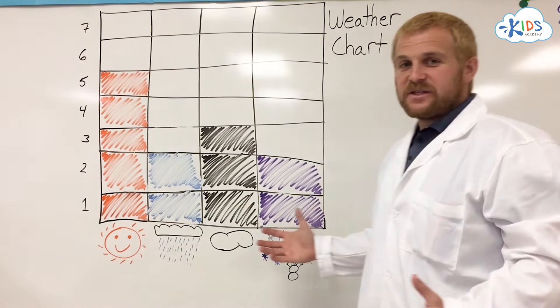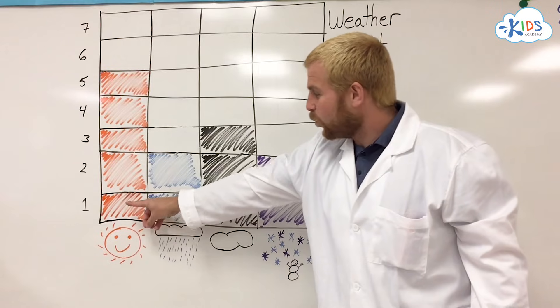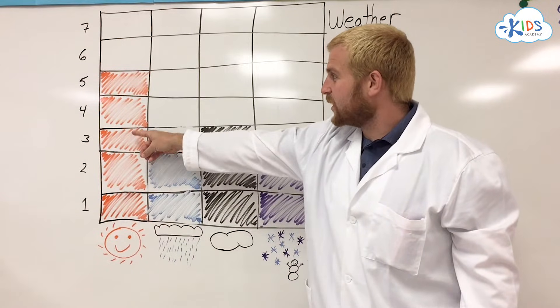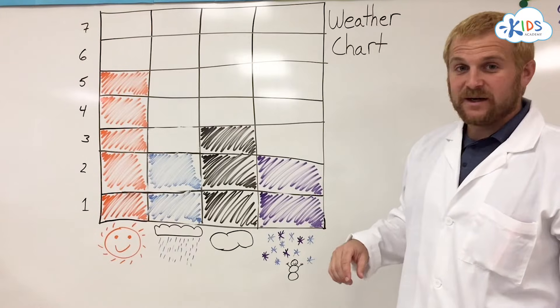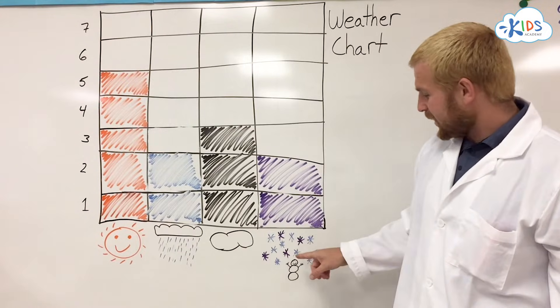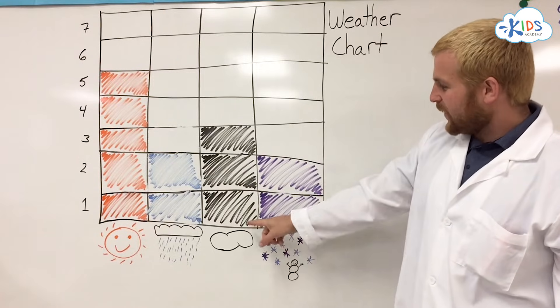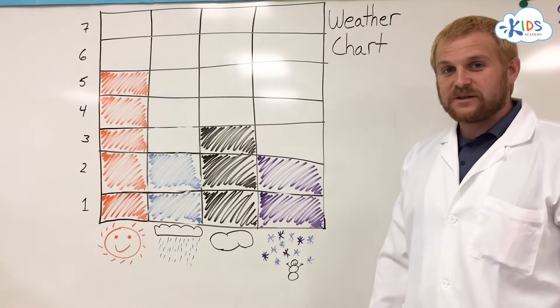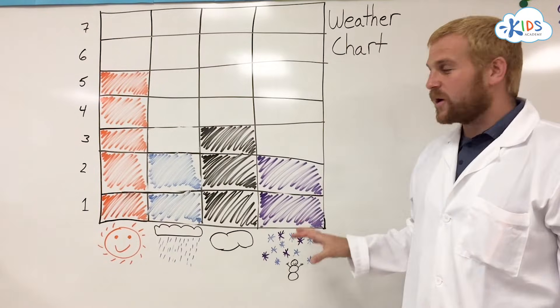Let's revisit the weather chart. You can see overall the most days were sunny with one, two, three, four, five sunny days. And the least amount of days is both rainy and snowy with one, two days each. And then three days of clouds. How many days overall did we record on our chart?